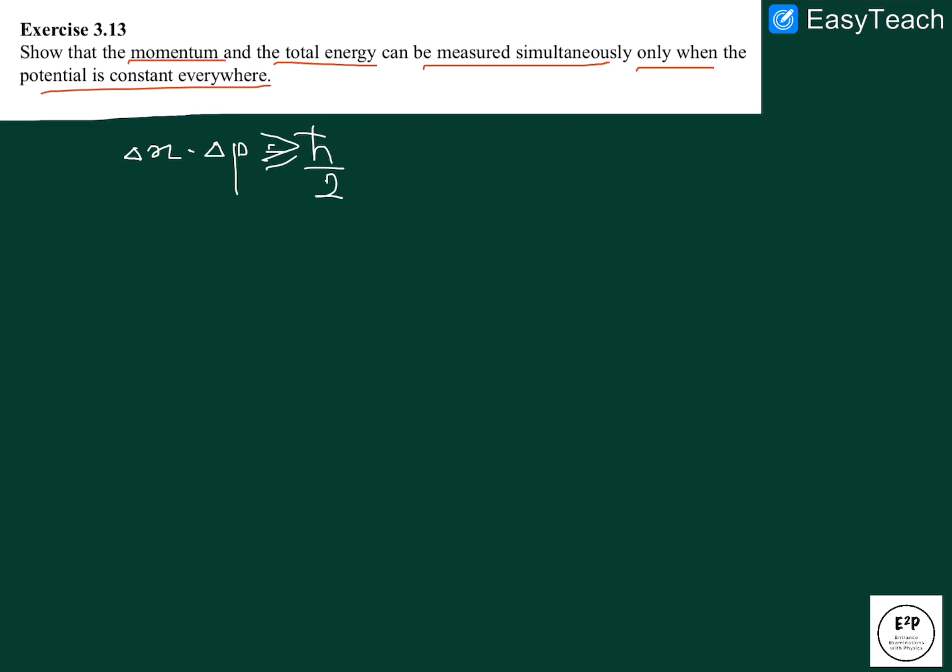Now this is for two specific operators. If I generalize this for some random operator A and some random operator B, the uncertainty between two is always greater than or equal to half the modulus of the expectation of A and B commutator.